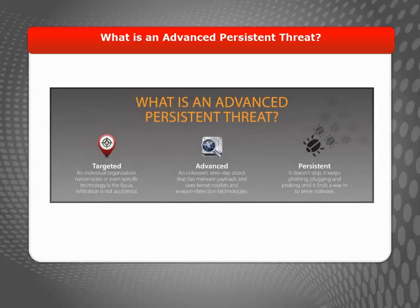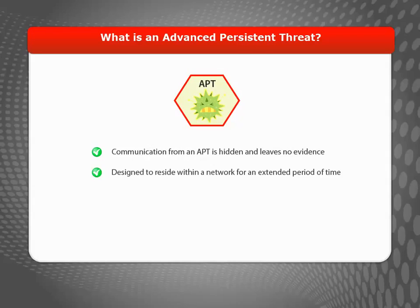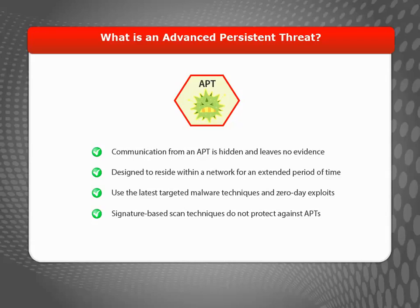An Advanced Persistent Threat, or APT, is a type of network attack that can put your networks and confidential data at risk. APT attacks are particularly dangerous because once they penetrate a network, they can remain undetected for a long time. Because APT attacks use the latest targeted malware techniques and zero-day exploits to infect networks, traditional signature-based scan techniques don't provide enough protection.